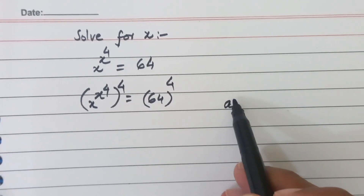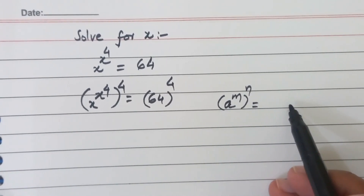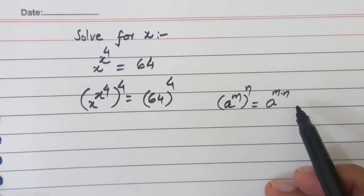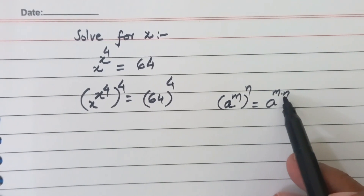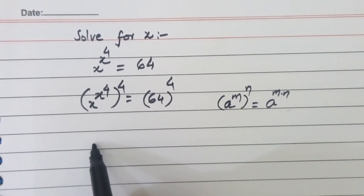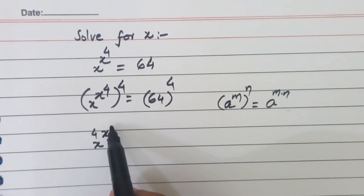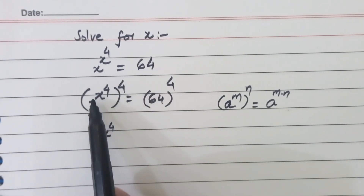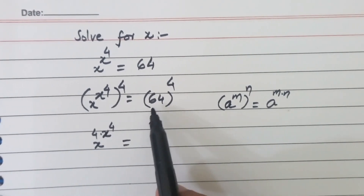Now, we know this formula: a raised to the power m to the power n can be written as a raised to the power m times n. Applying this formula on the left hand side, we can write it as s to the power 4 times s raised to the power 4.